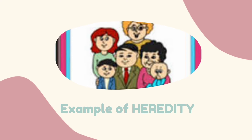Example of heredity — توارث کی مثال۔ وہ خصوصیات جو والدین سے بچوں میں منتقل ہوتی ہیں، جیسے شکل میں ہمیں دکھائی دے رہا ہے کہ والدین کے بالوں کی طرح ہی بچوں کے بال دکھائی دے رہے ہیں، چہرے کی بناوٹ، قد — یہ تمام خصوصیات والدین اور بچوں میں برابر ہیں۔ اسے ہی heredity characters، توارثی خصوصیات کہتے ہیں۔